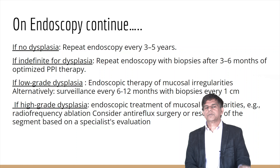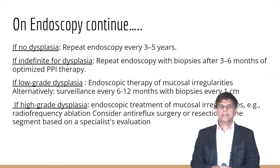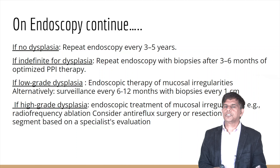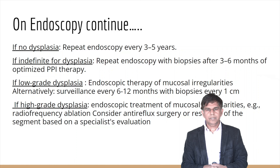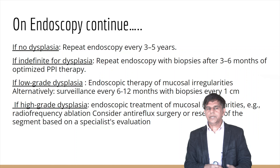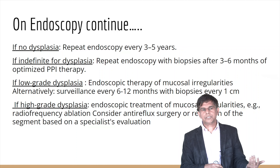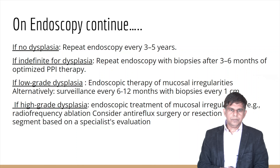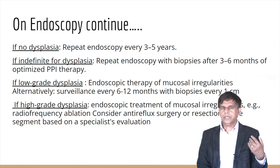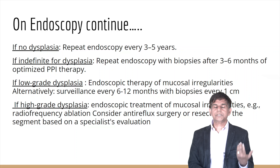If indefinite for dysplasia, repeat endoscopy with biopsy at three to six months after optimizing PPI therapy. For low-grade dysplasia: endoscopic therapy of mucosal irregularities, or alternatively surveillance every six to twelve months with biopsies every one centimeter. For high-grade dysplasia: endoscopic treatment of mucosal irregularities such as radiofrequency ablation, anti-reflux surgery, or resection based on evaluation. If there is no dysplasia, surveillance every three to five years; high-grade dysplasia may warrant resection.